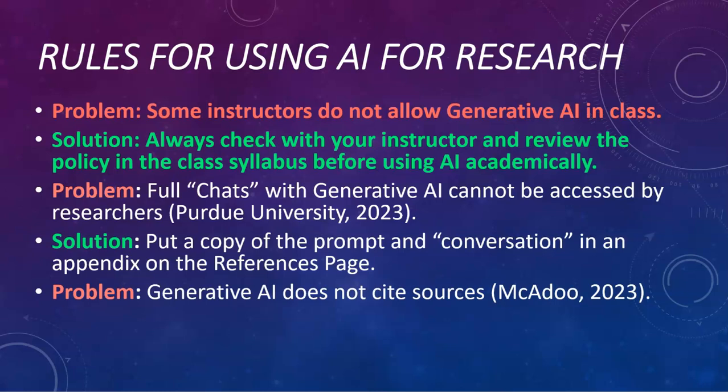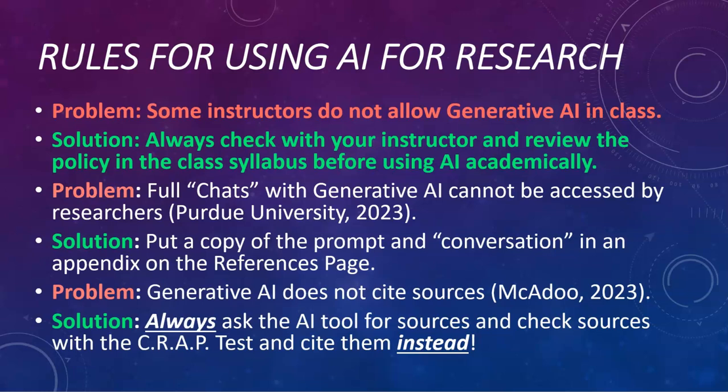Another problem with AI is that it doesn't cite sources, so we'll need to actually ask in the prompt for AI to provide sources. Then we'll use those sources and their information instead — we'll cite them instead of the AI tool. And that means we're going to have to check them with the CRAP test too, just like we would with any other source.